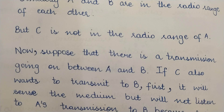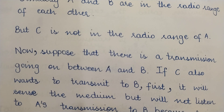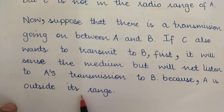When sensing the transmission medium, a node can only sense those stations that are in its radio range. C is in the radio range of B, so it can sense B's communication. But C is not in the radio range of A, so even if A is communicating, C cannot sense or listen to that communication. So even if C senses the transmission medium, it will not be able to listen to A's transmission for the simple reason that C is not in the radio range of A.